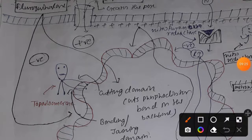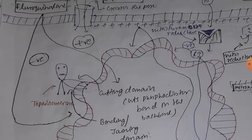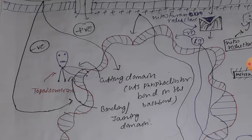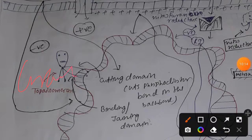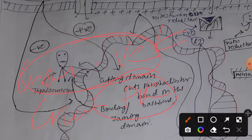Examples of fluoroquinolones include levofloxacin, ofloxacin, and ciprofloxacin. To recap: fluoroquinolone both positively and negatively affects topoisomerase. It positively affects the cutting domain, increasing cutting of phosphodiester bonds, while negatively affecting the joining or binding domain, which facilitates DNA fragmentation. It is mainly effective against gram-negative bacteria, though also applicable to some gram-positive bacteria.